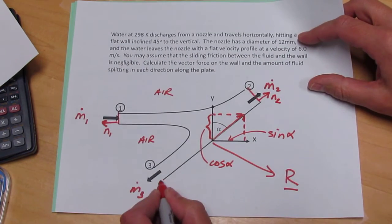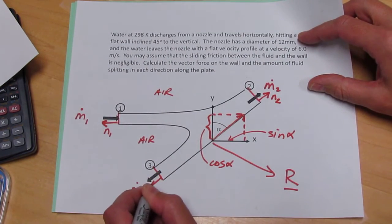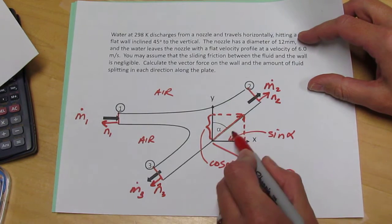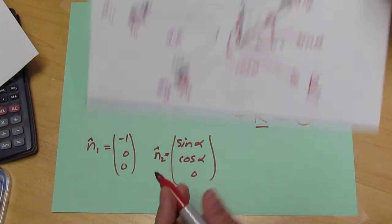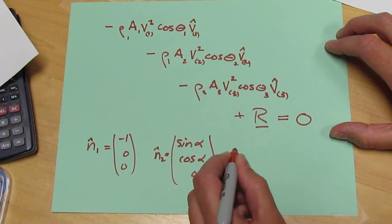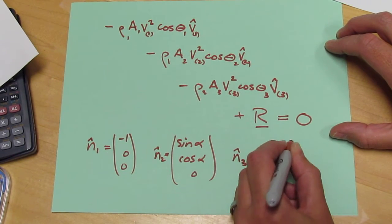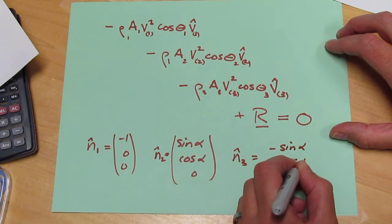The unit normal direction that is outwardly pointing at the three plane is just the minus of the one at the two plane. So N3 is minus sine alpha minus cos alpha, 0.